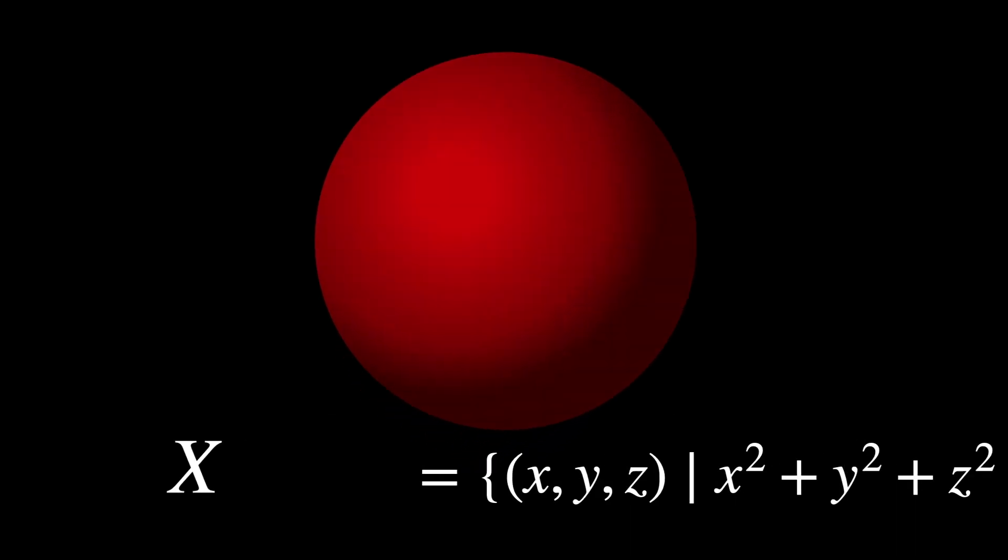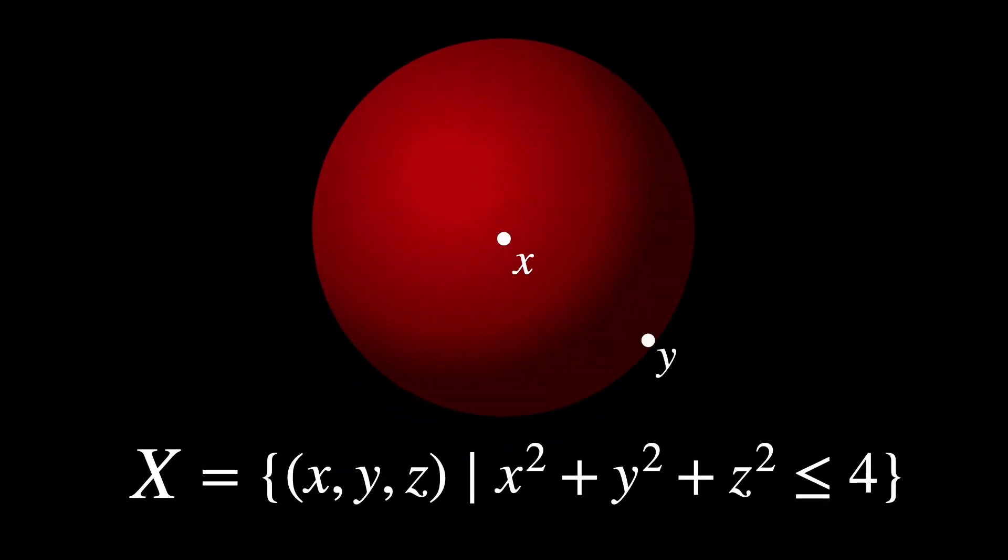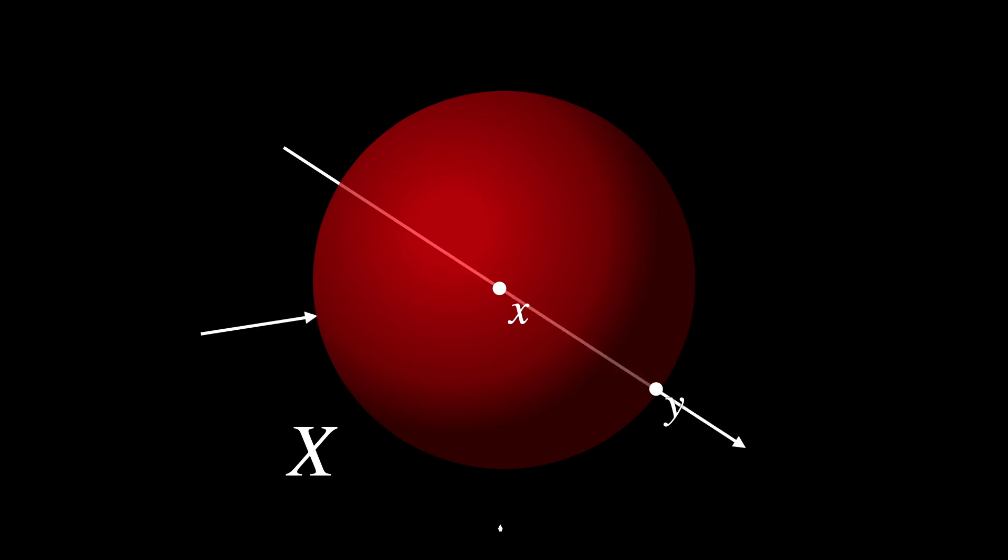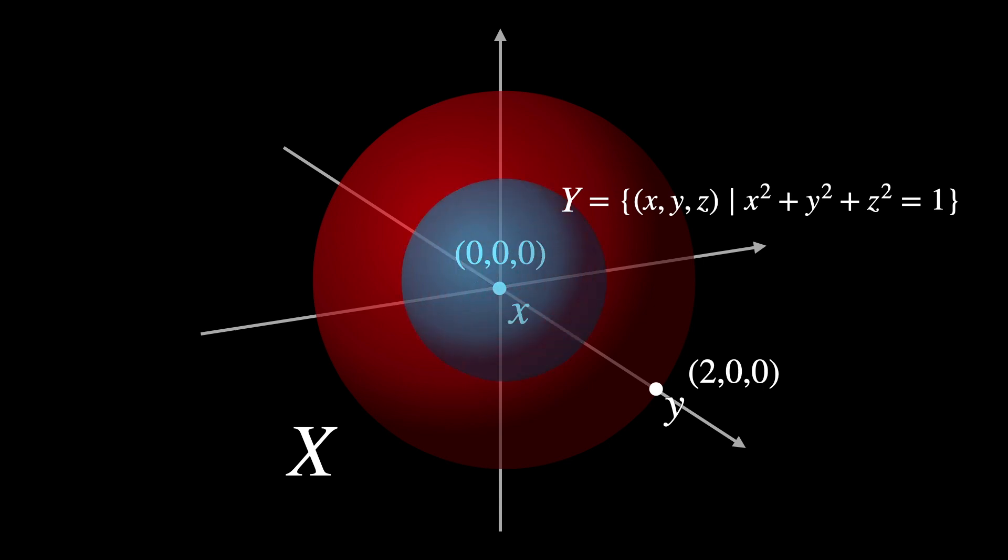Let's try to be more precise. Say we have the set X, which is a solid sphere of radius 2, and it contains the points X and Y. Let X be the center of the sphere, 0, 0, 0. And Y be a point on the boundary of the sphere, say 2, 0, 0. Now say there's a surface of a smaller sphere of radius 1, centered at the origin. We'll call it Y. Y is something known as a barrier.